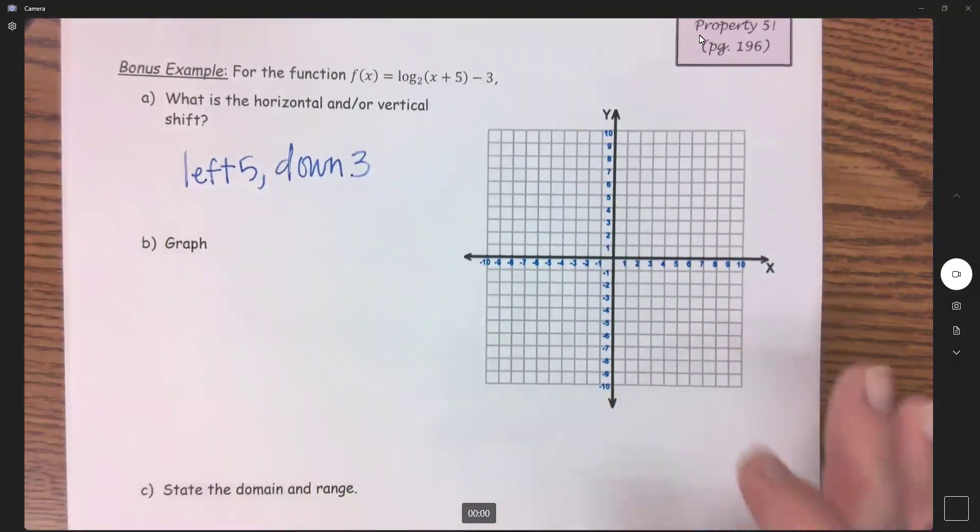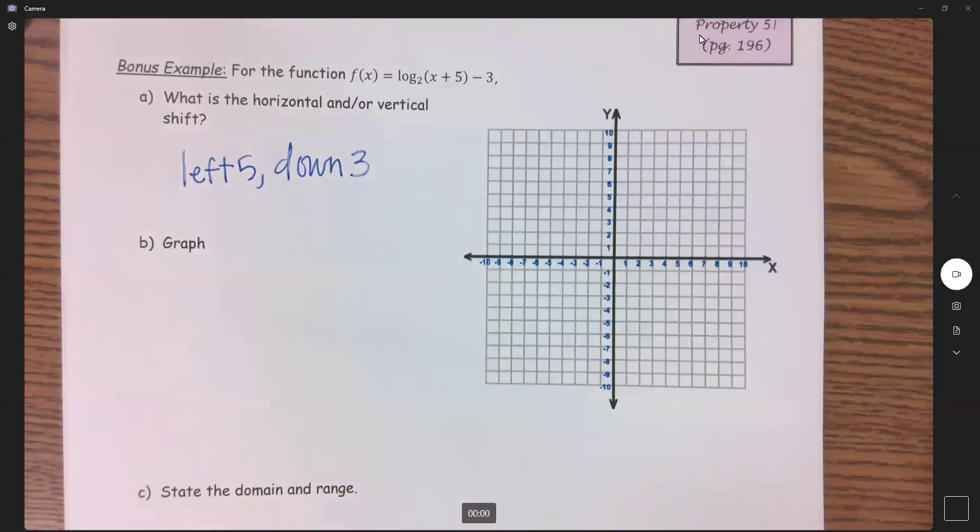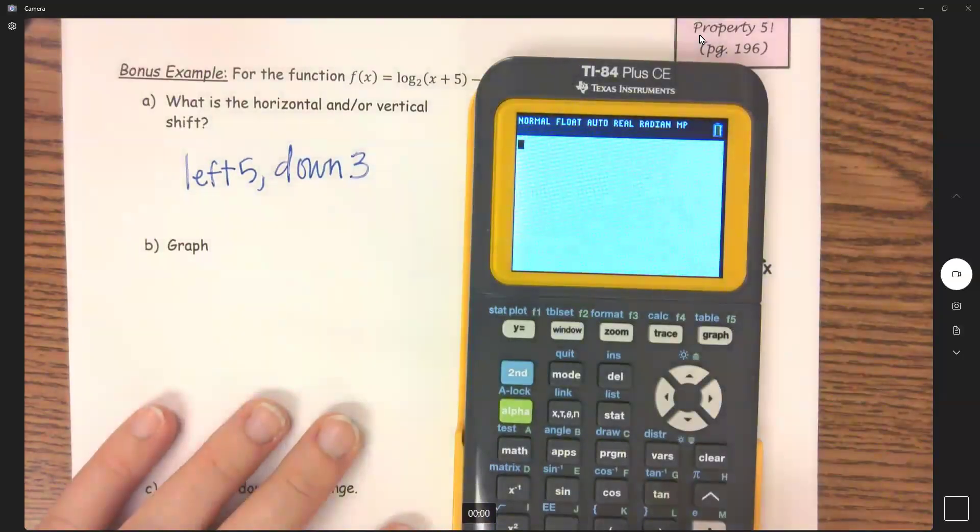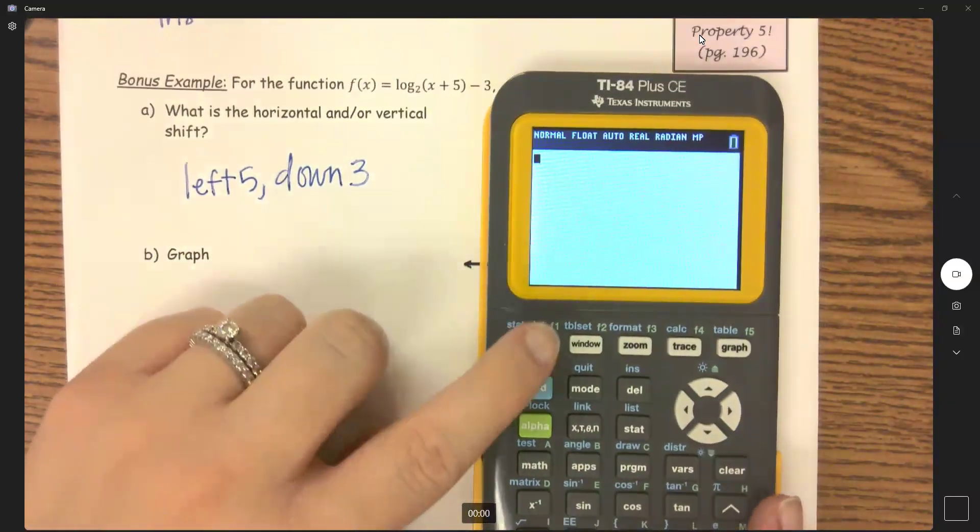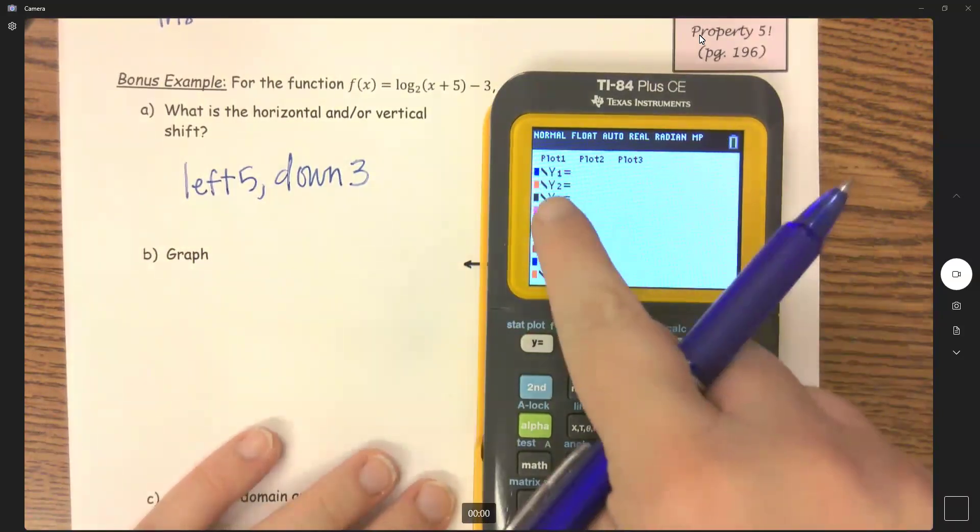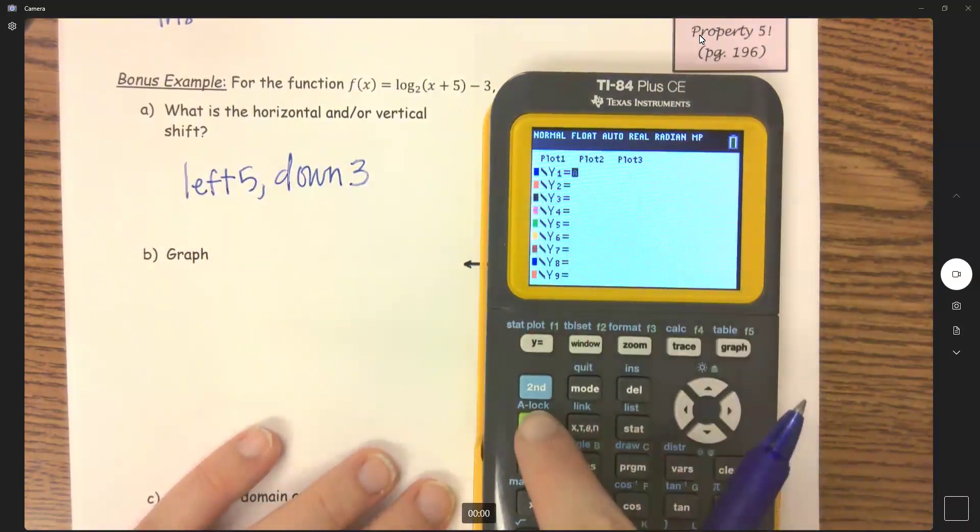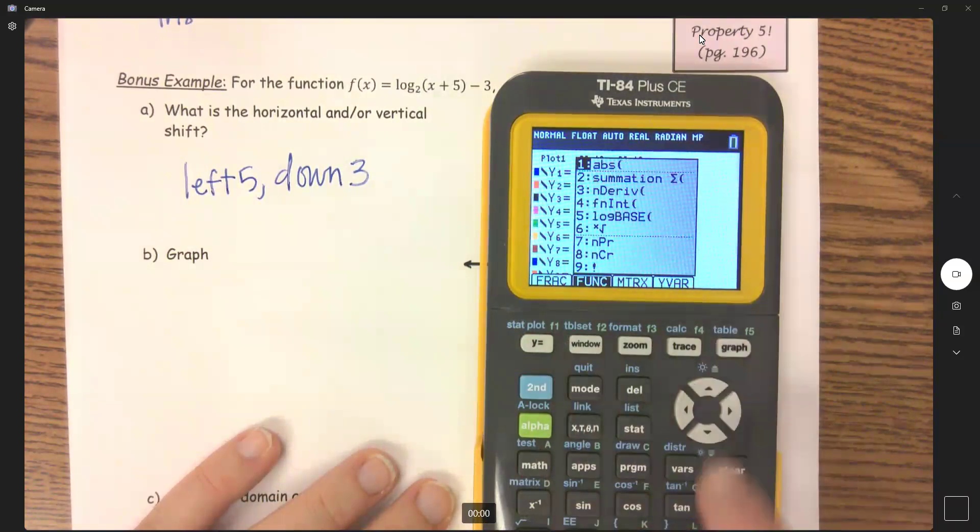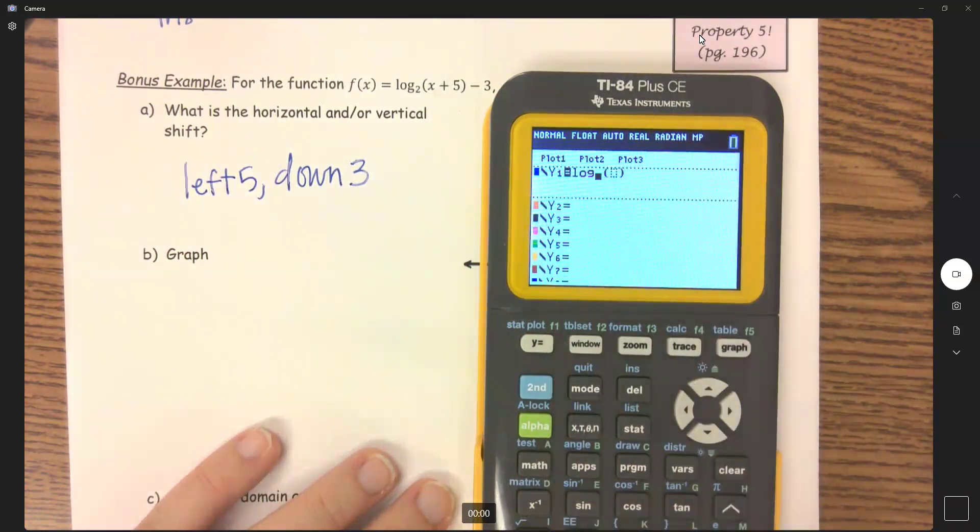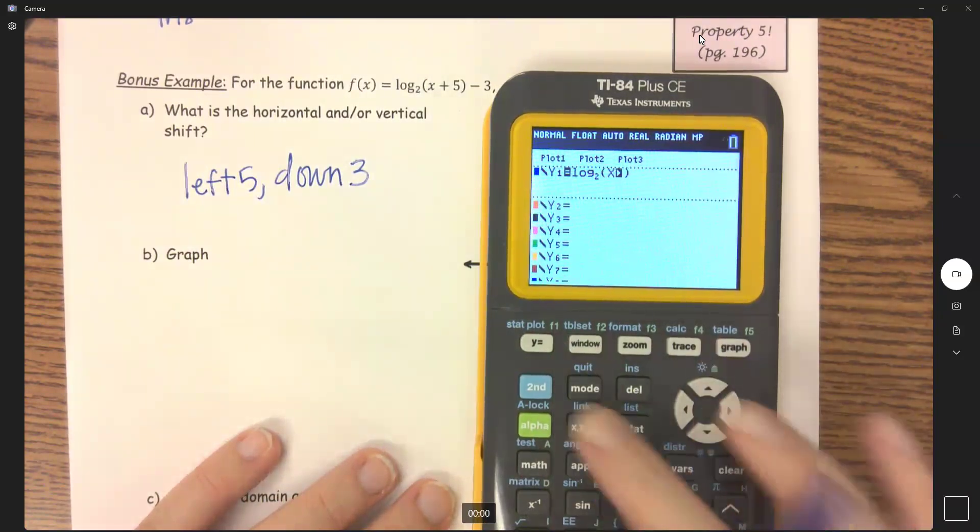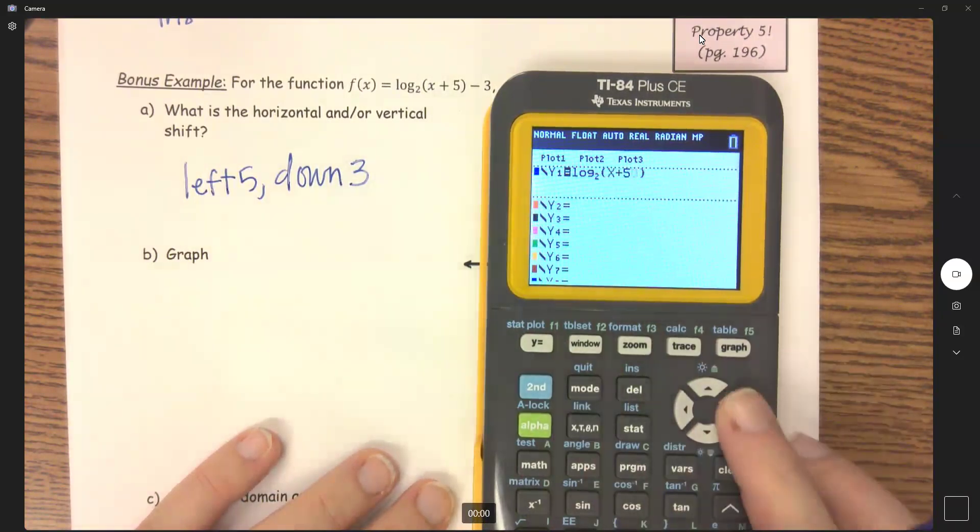So now let's graph this. Let's put this into our calculator. In my y1, I'm going to go alpha window and go down to number five. And now I can put in log base two of x plus five, get out of those parentheses, and then minus three.